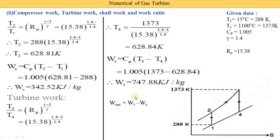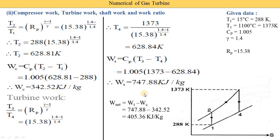Next we find the net work or shaft work, which equals turbine work minus compressor work: 747.88 − 342.52 = 405.36 kJ/kg.